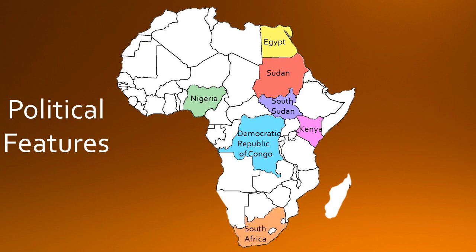And lastly we have South Africa. It is located at the southernmost tip of Africa and this country is unique because it has three capitals: Pretoria, Cape Town, and Bloemfontein.